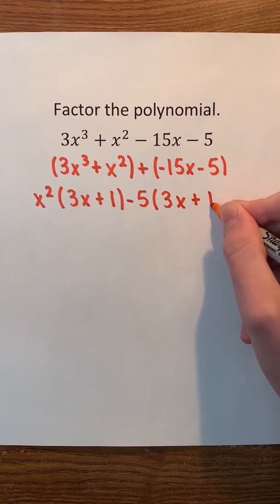Now, we can see that the factors will be x squared minus 5 and 3x plus 1.